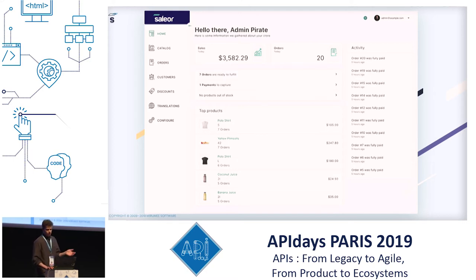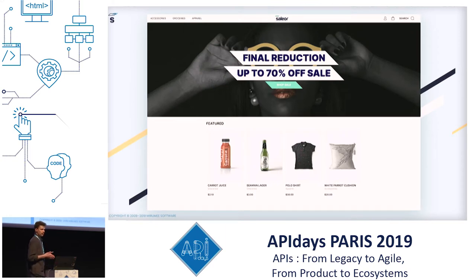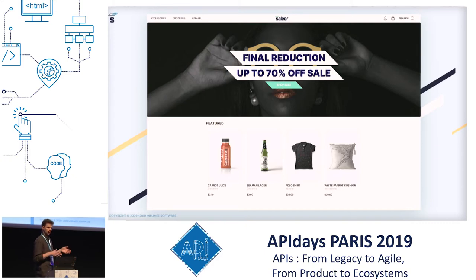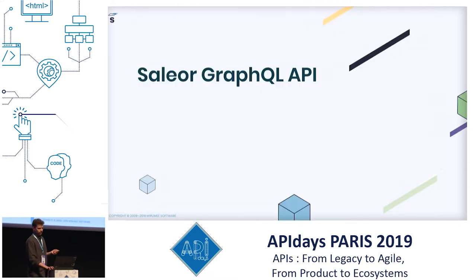If you want to host it yourself because you want to own your data or have control over the entire codebase, you can do that with Saleor as well. It consists of a few parts: first, a management dashboard — a large CRUD application built in React and TypeScript, powered by a GraphQL API — with management sections like catalog, orders, customers, and so on. The other part is the public storefront, also a single-page app in React and TypeScript powered by GraphQL. And at the core of this entire platform lies the GraphQL API.